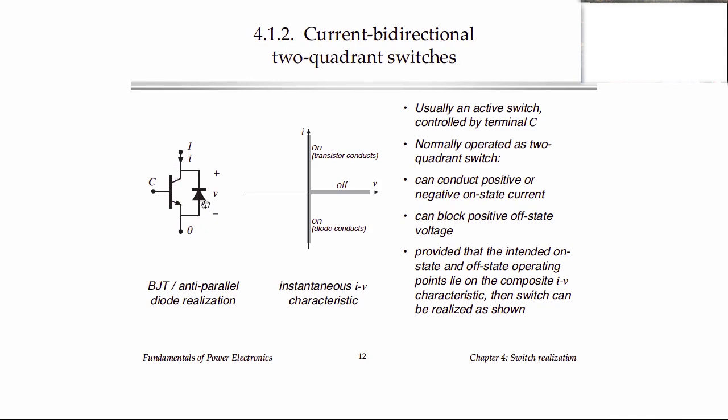However, it can only block voltage in one direction. So when we want the switch to be off, if it blocks a voltage that is positive, plus to minus in this direction, both devices can be off. But if we reverse the direction of the voltage, you can see that the diode will turn on and short out the voltage source. So this combination is capable only of blocking one polarity of voltage, and so it's what we call a two-quadrant switch that is current bidirectional.